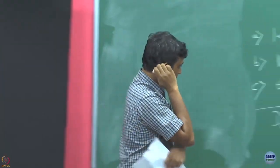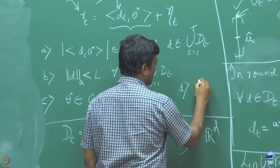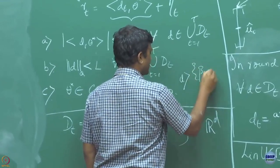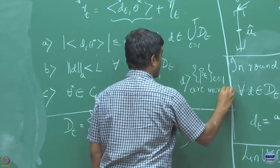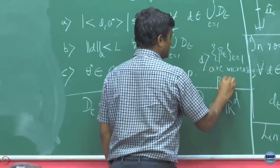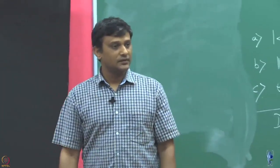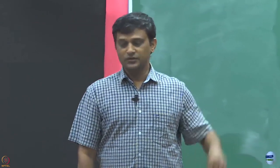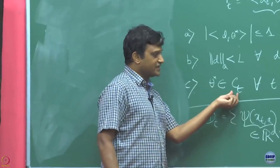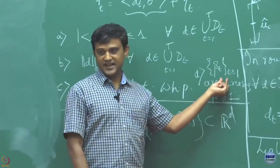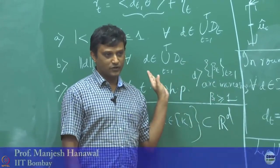I need to mention again: I am going to assume specifically that my β_t sequence is increasing, with β_1, the first element, being greater than or equal to 1.